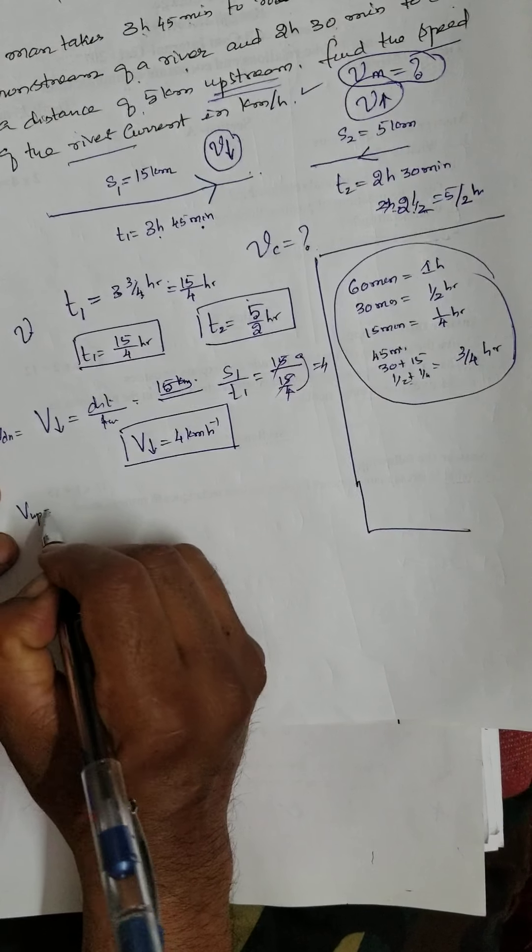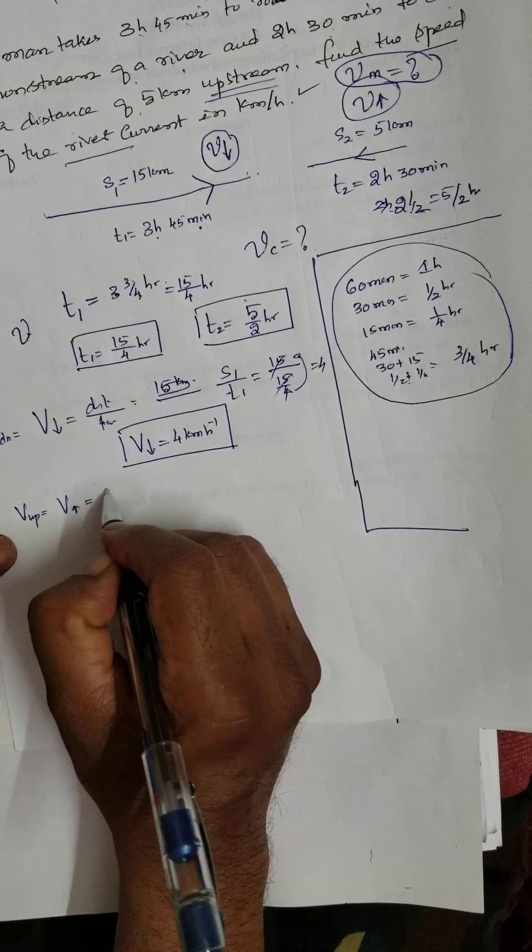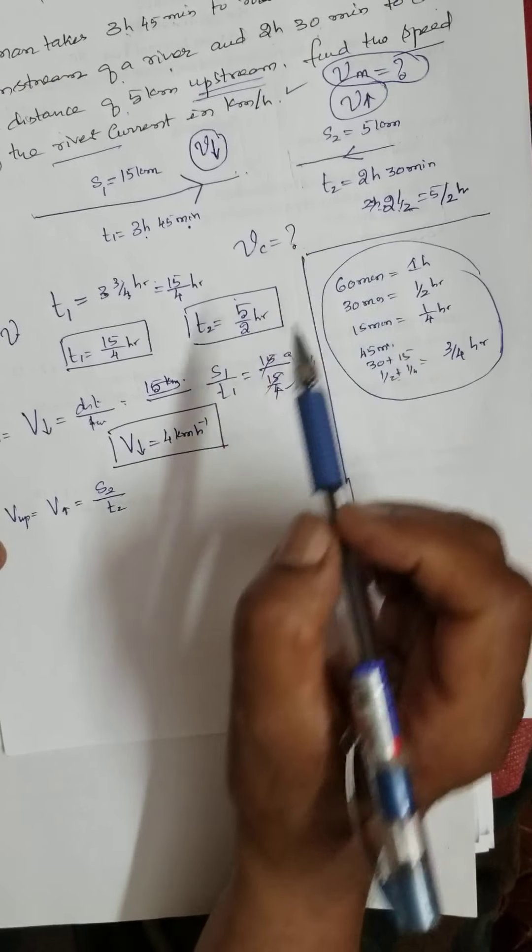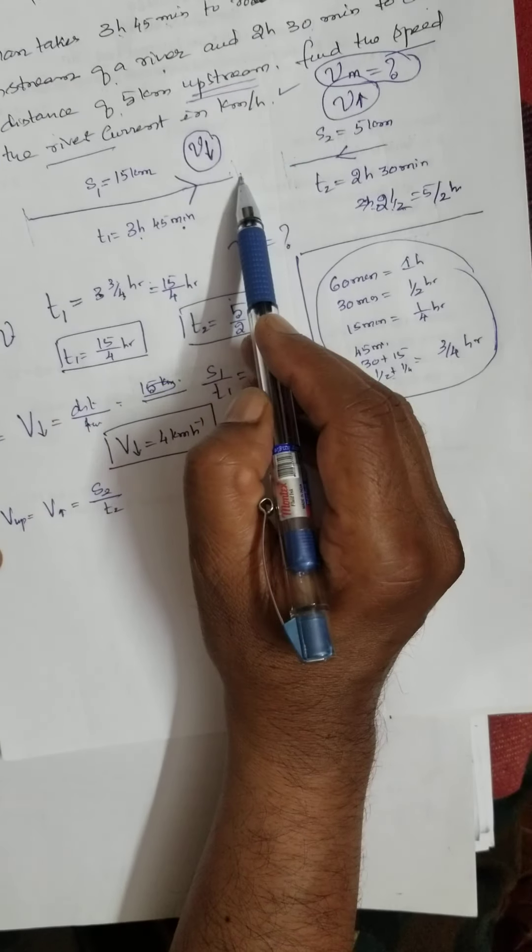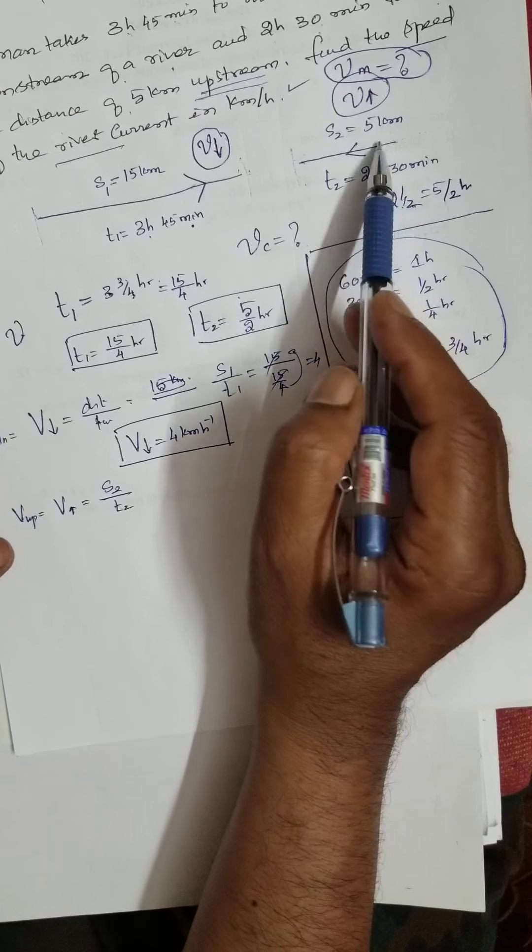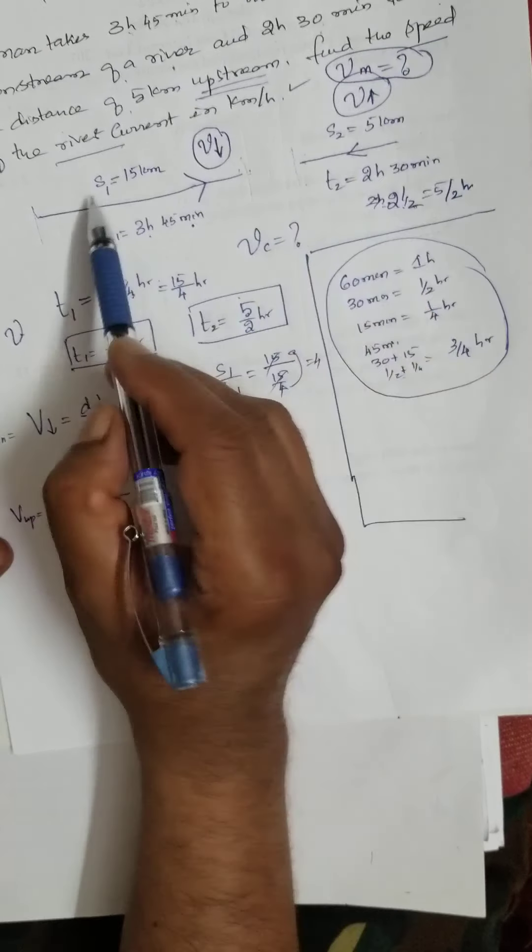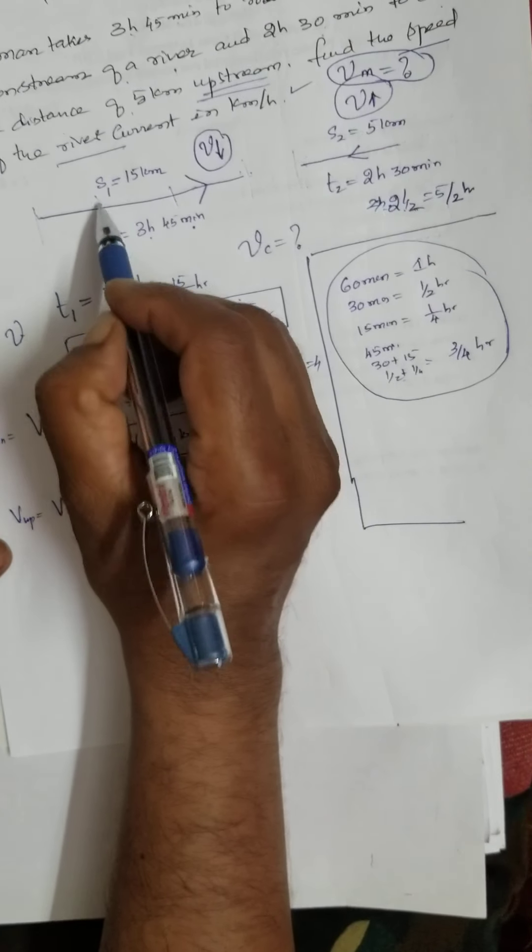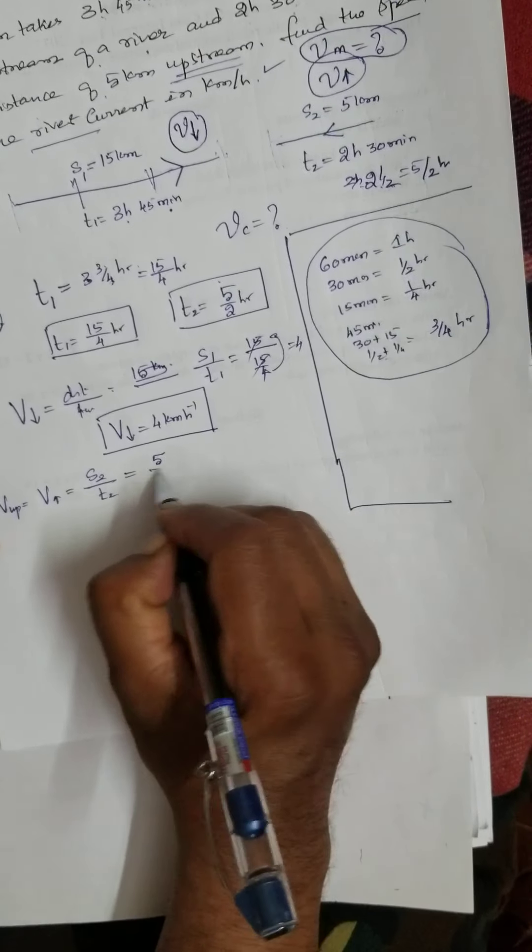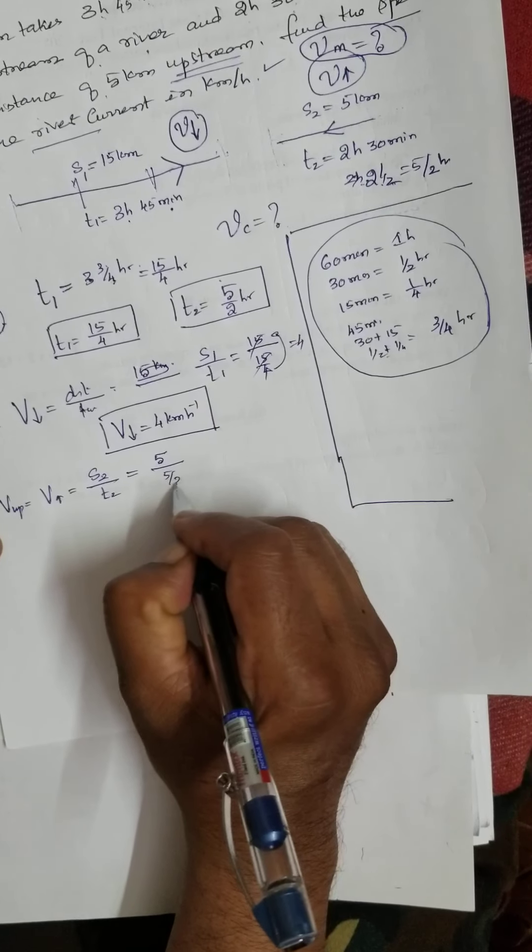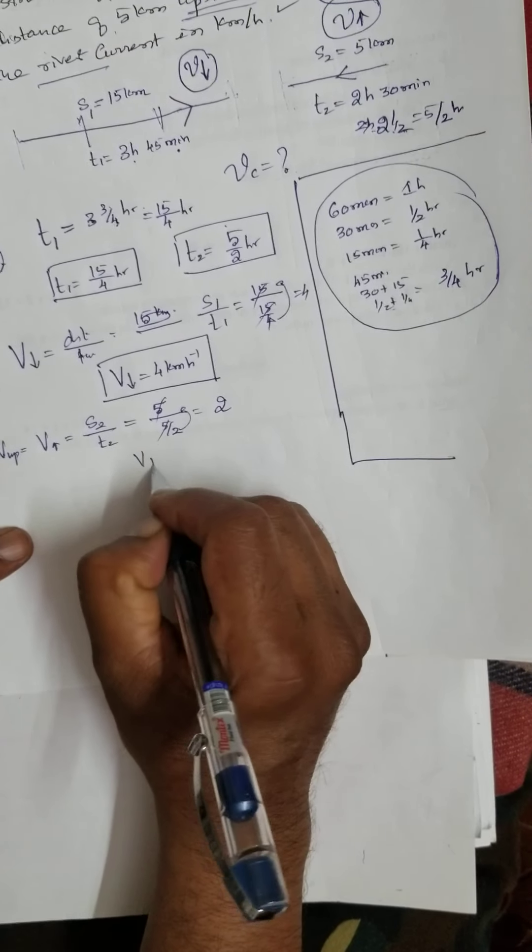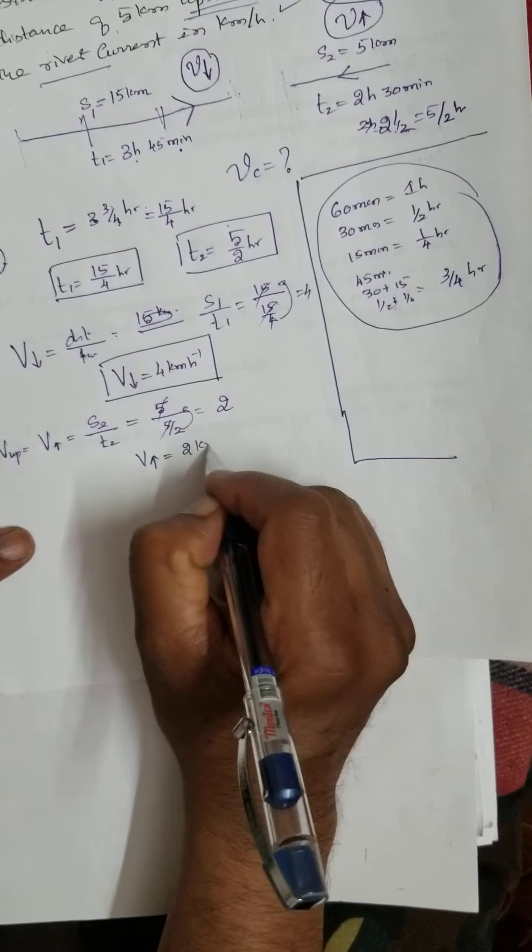Then what is velocity upstream? That means velocity upstream is equal to, again, distance by time. Distance by, how much distance to cover? It is easy to go along, but against the wave, it is very difficult. It is very difficult. It takes so much time. So much time to cover only 5. There is very less time to cover 15. Therefore, here, what is S2? S2 is equal to 5 kilometer by T2 is what? 5 by 2. This one, the castle, this goes up 2. Therefore, what is V upstream? 2 kilometer per hour.